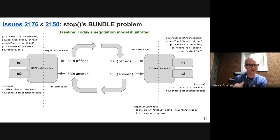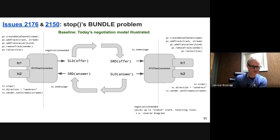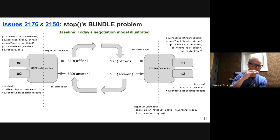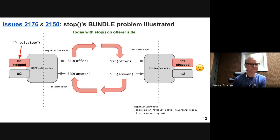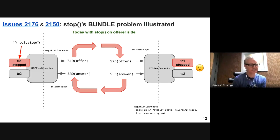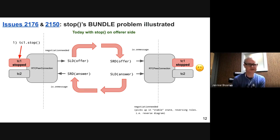If you call add track on the answer side, that fires negotiation needed. But the answer basically says, hold on — we're going to wait with negotiation needed until we're back to stable state because that's much simpler. In that case, the roles end up being reversed and an offer will come out from the answer side. So today, this is with stop on the offer side — everything works great. You have two transceivers, TC1 and TC2. You call TC1 stop. JSEP creates a zero port that gets sent over to the other side. The other transceiver gets stopped. Everything's wonderful. You come back to stable state on both sides.